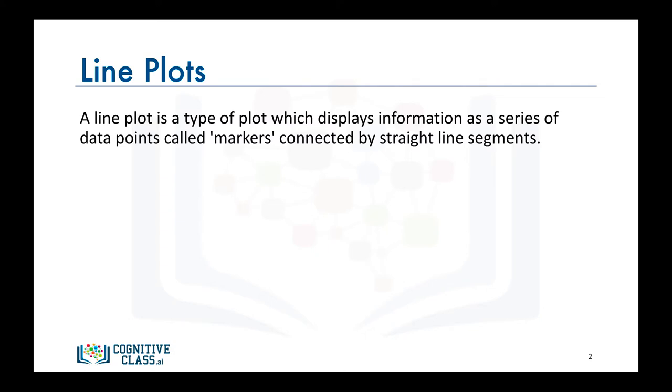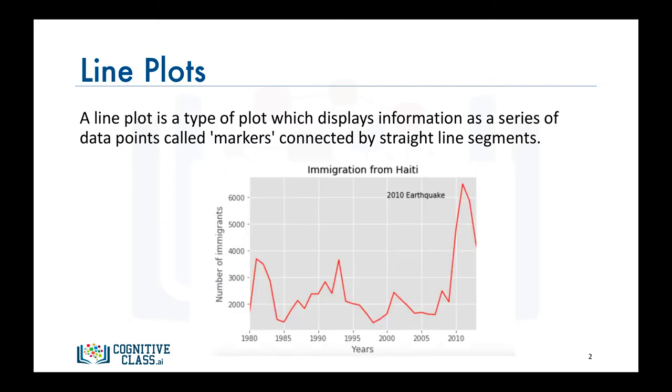As an example, say we are interested in the trend of immigrants from Haiti to Canada. We can generate a line plot and the resulting figure will depict the trend of Haitian immigrants to Canada from 1980 to 2013.